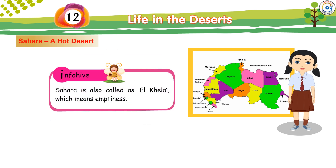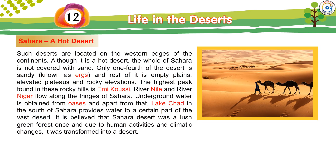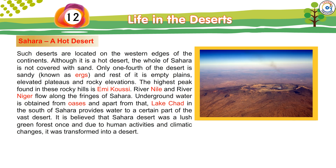Info Hive: Sahara is also called El Kela, which means emptiness. Such deserts are located on the western edges of the continents. Although it is a hot desert, the whole of Sahara is not covered with sand. Only one-fourth of the desert is sandy, known as ergs, and the rest of it is empty plains, elevated plateaus, and rocky elevations. The highest peak found in these rocky hills is Emi Koussi.